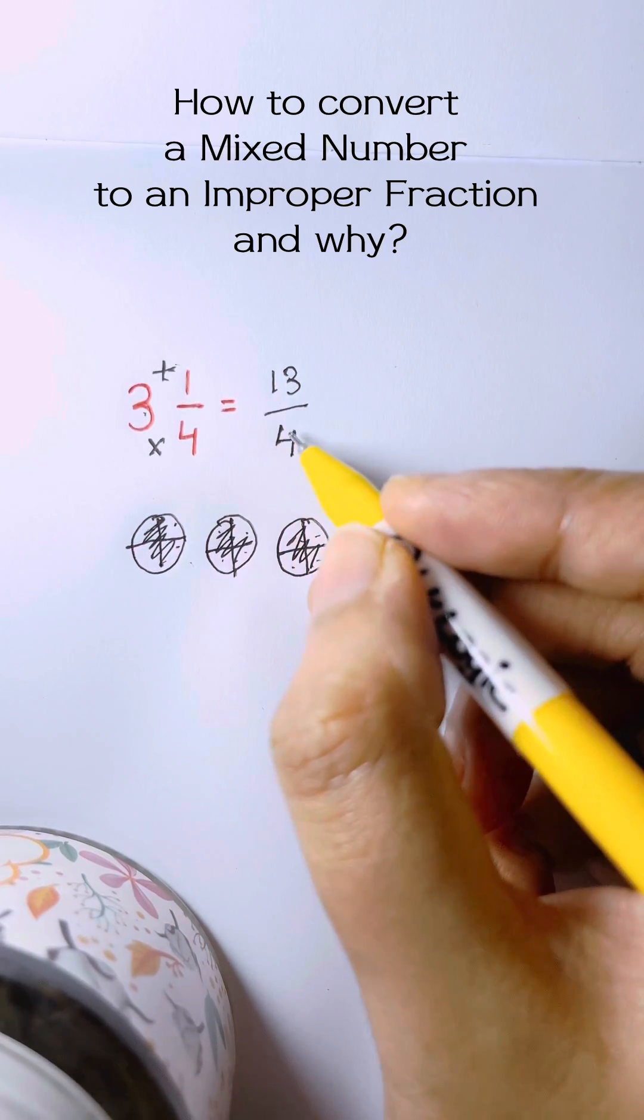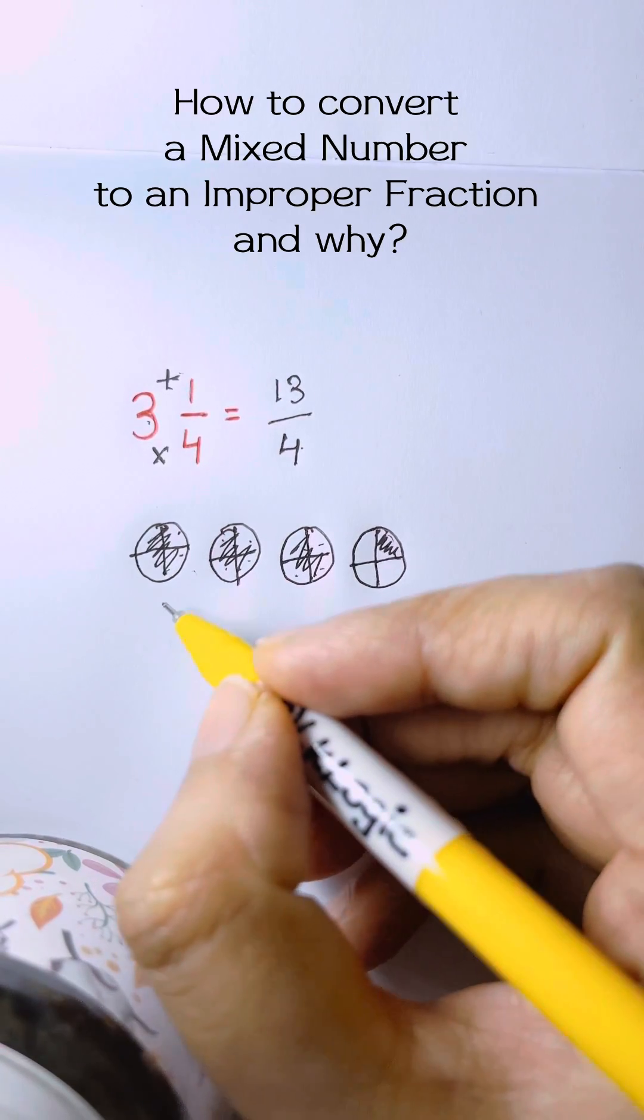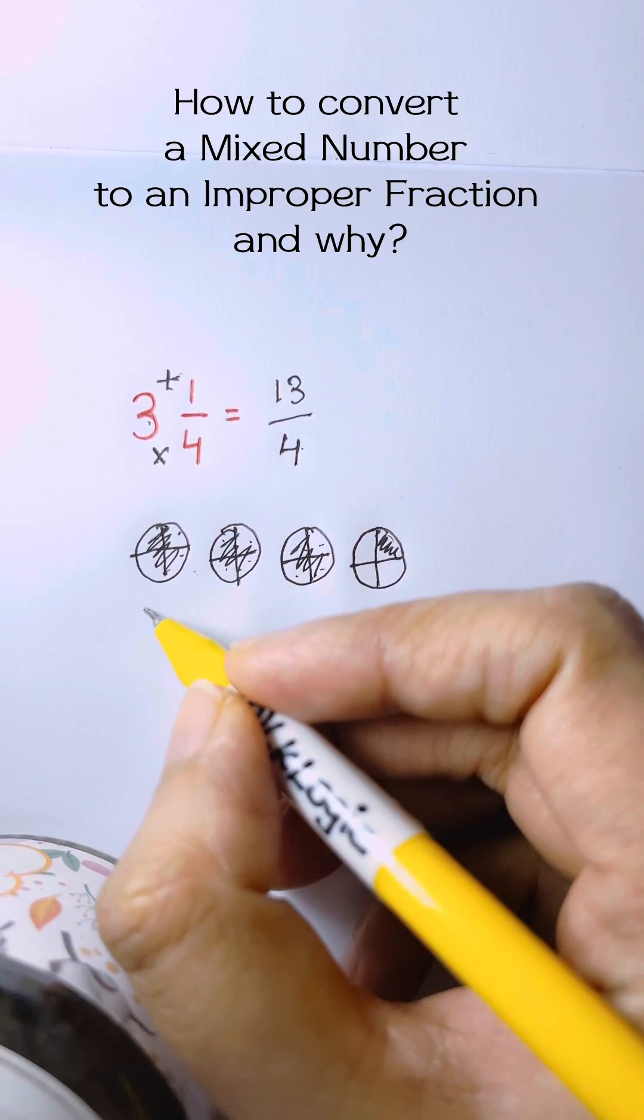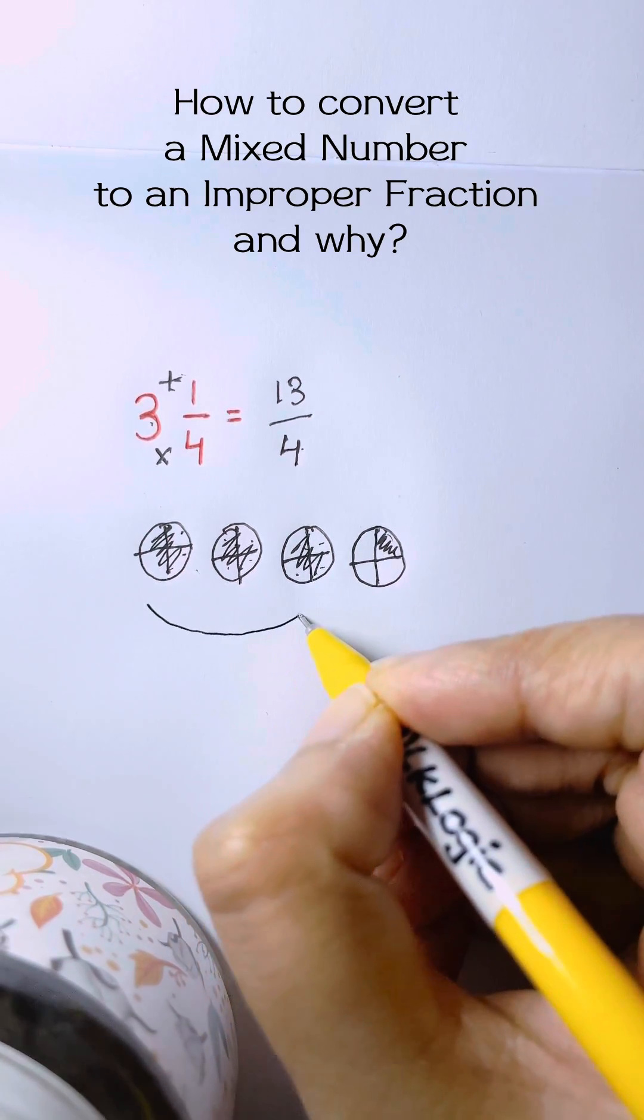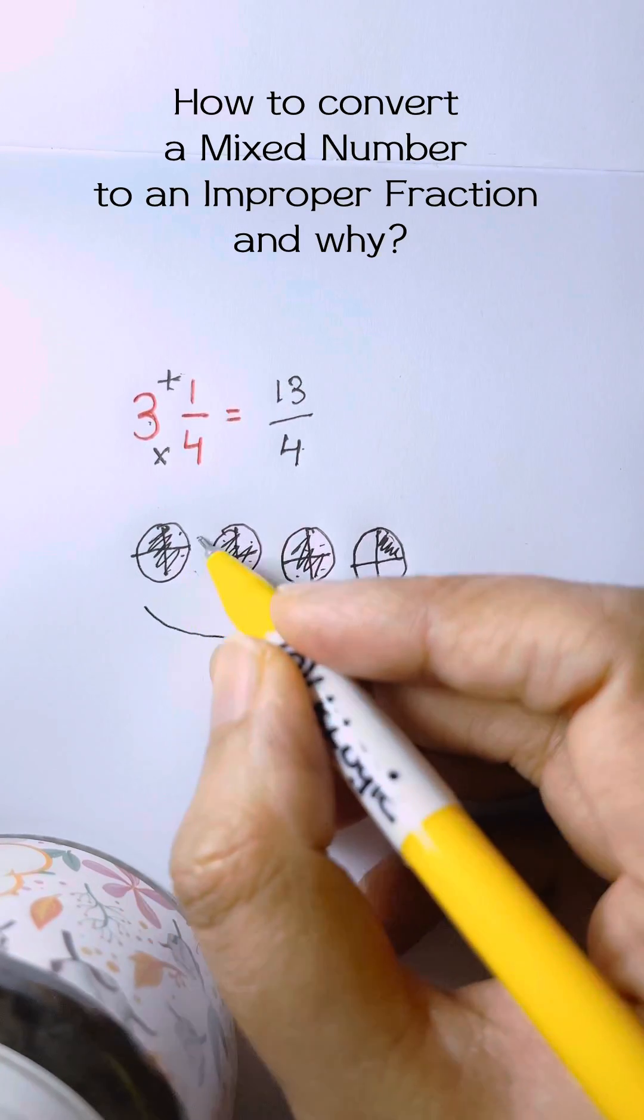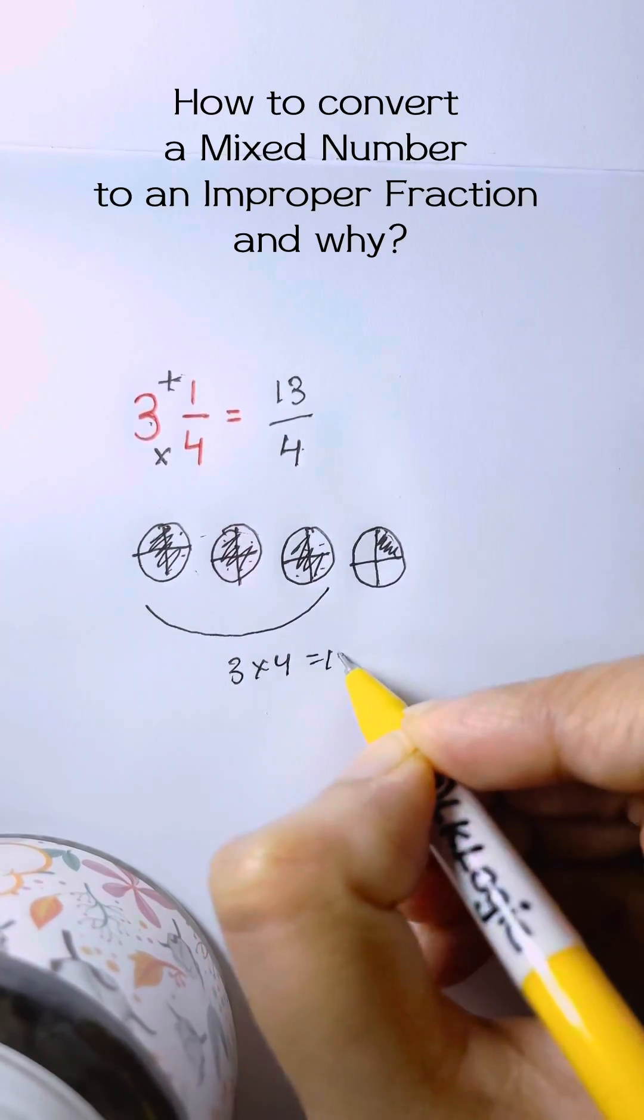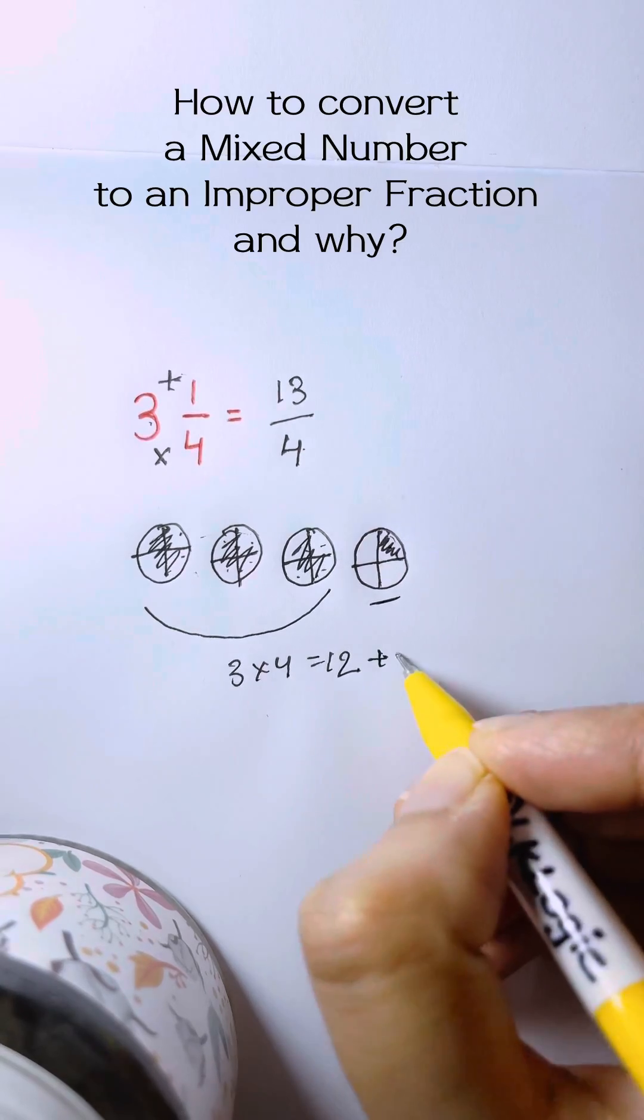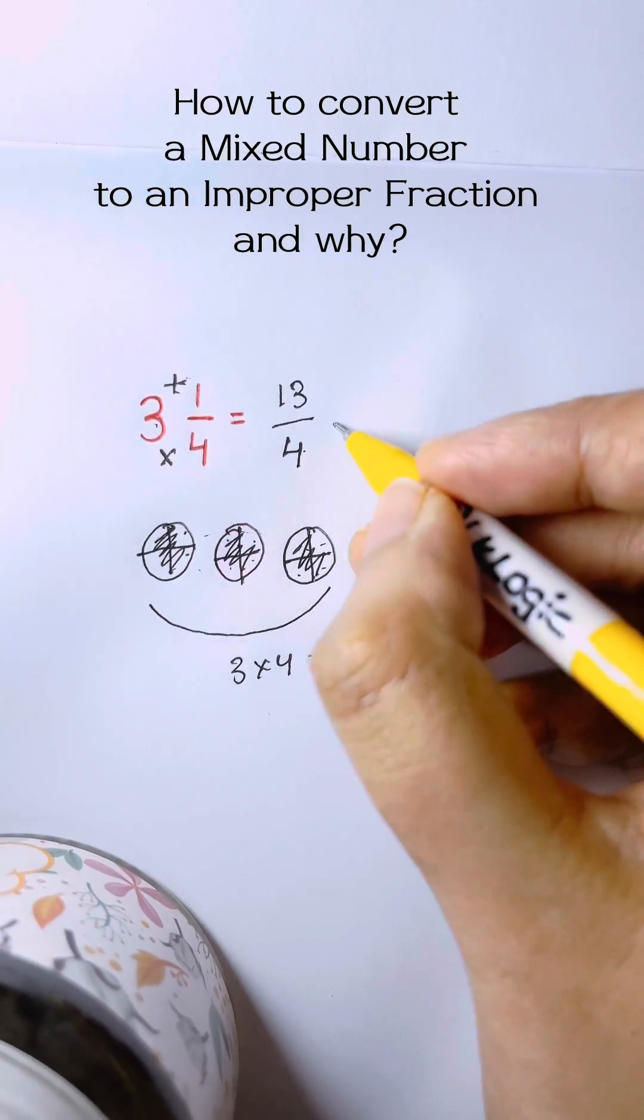And it's over 4 because every whole has been cut into 4 equal pieces. So when you are multiplying and adding, this process is just counting the total number of parts shaded. So you do 3 times 4 equals 12 because there are 3 groups of 4 and you add that 1 for that extra 1 right there. That's why 3 and 1 fourth equals 13 fourths.